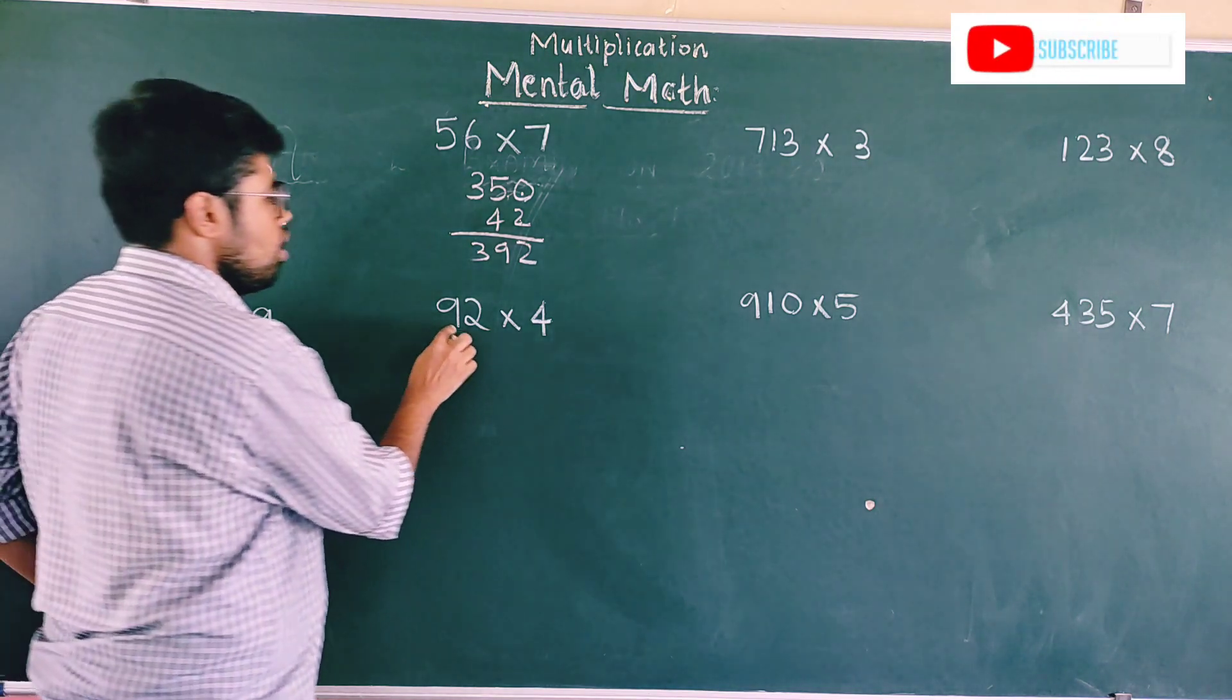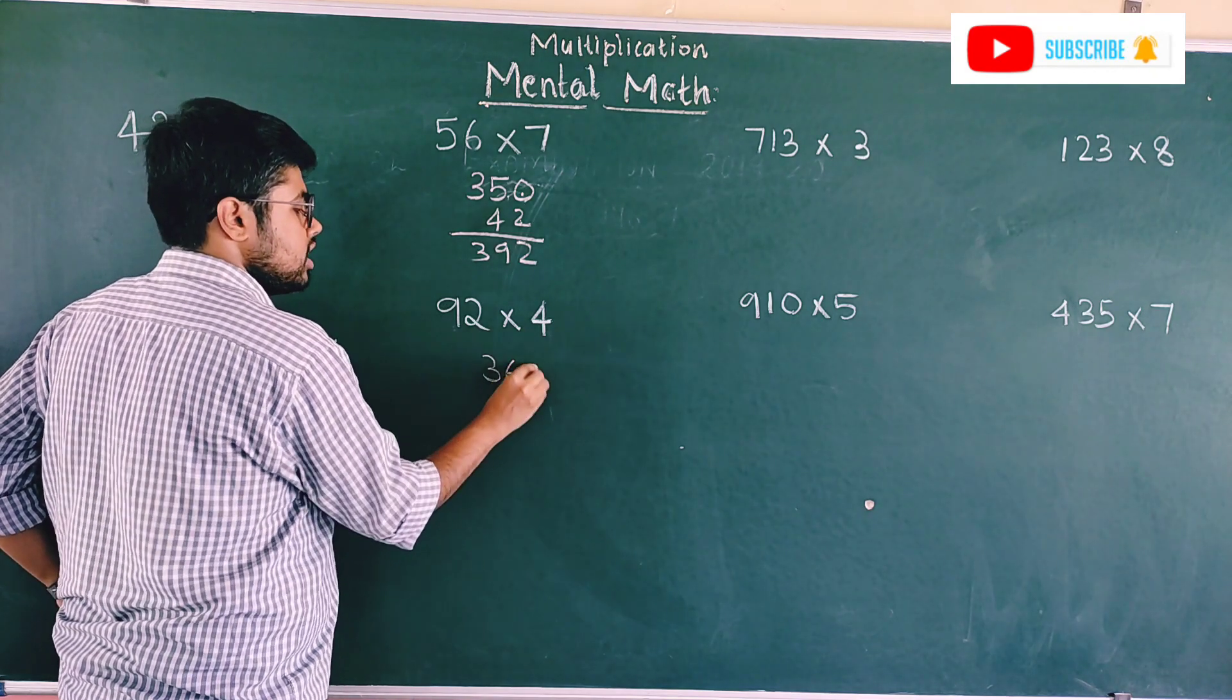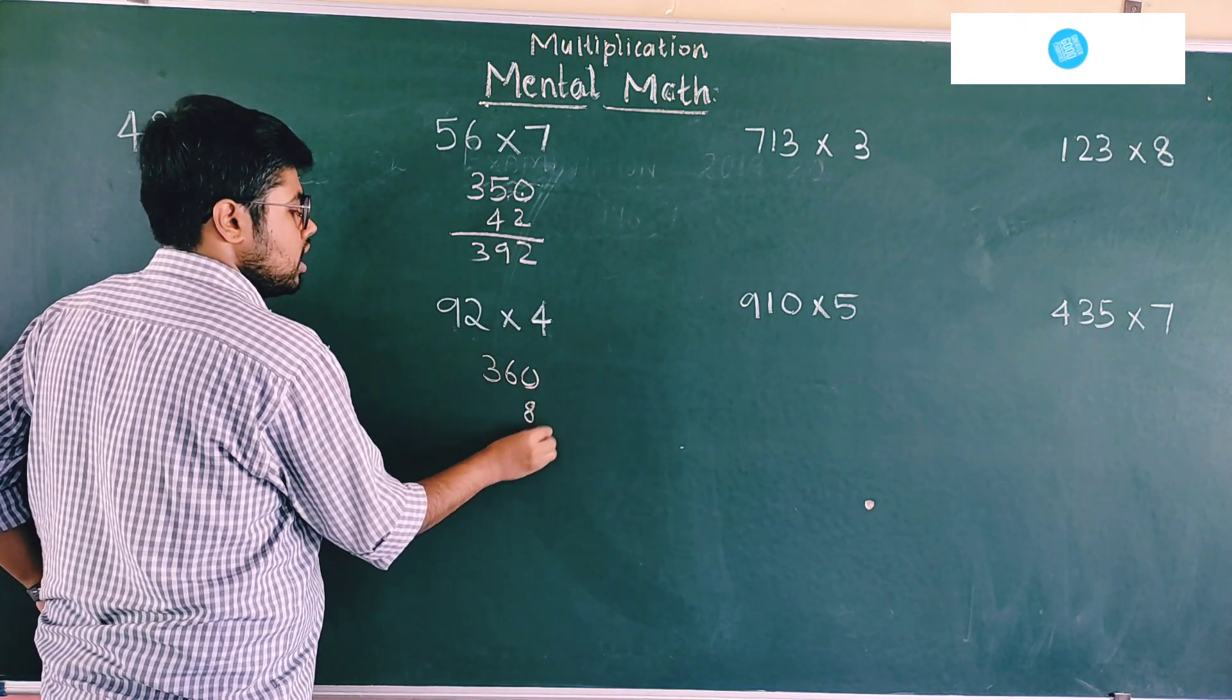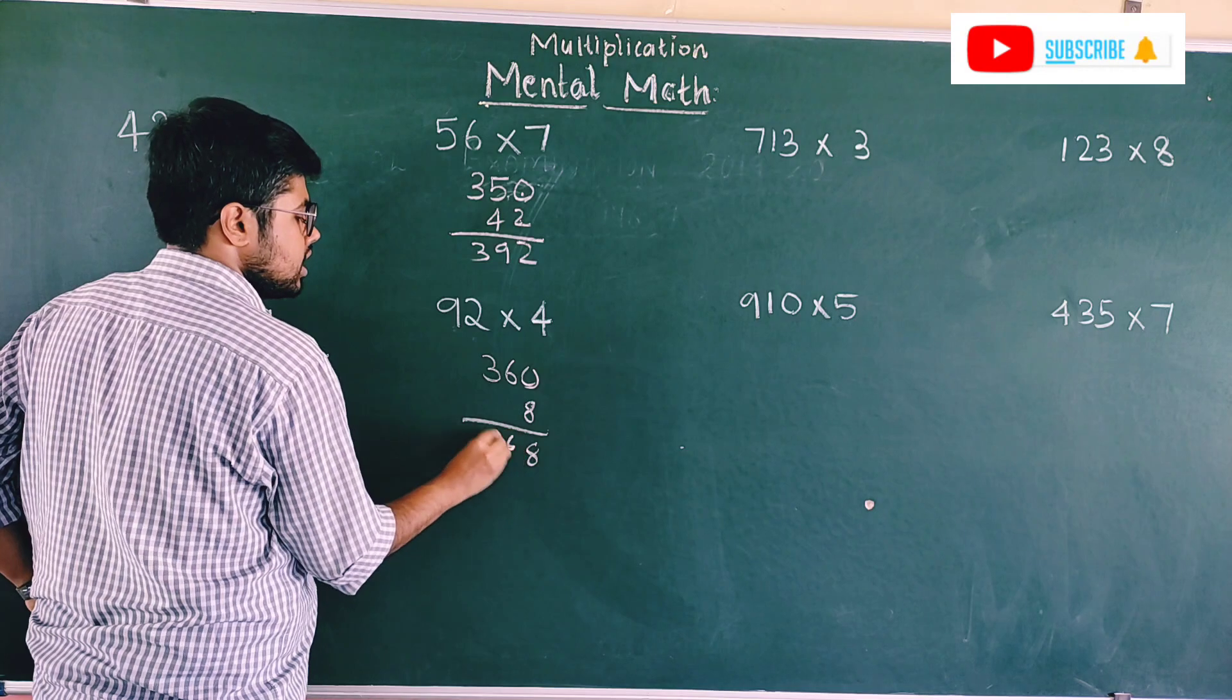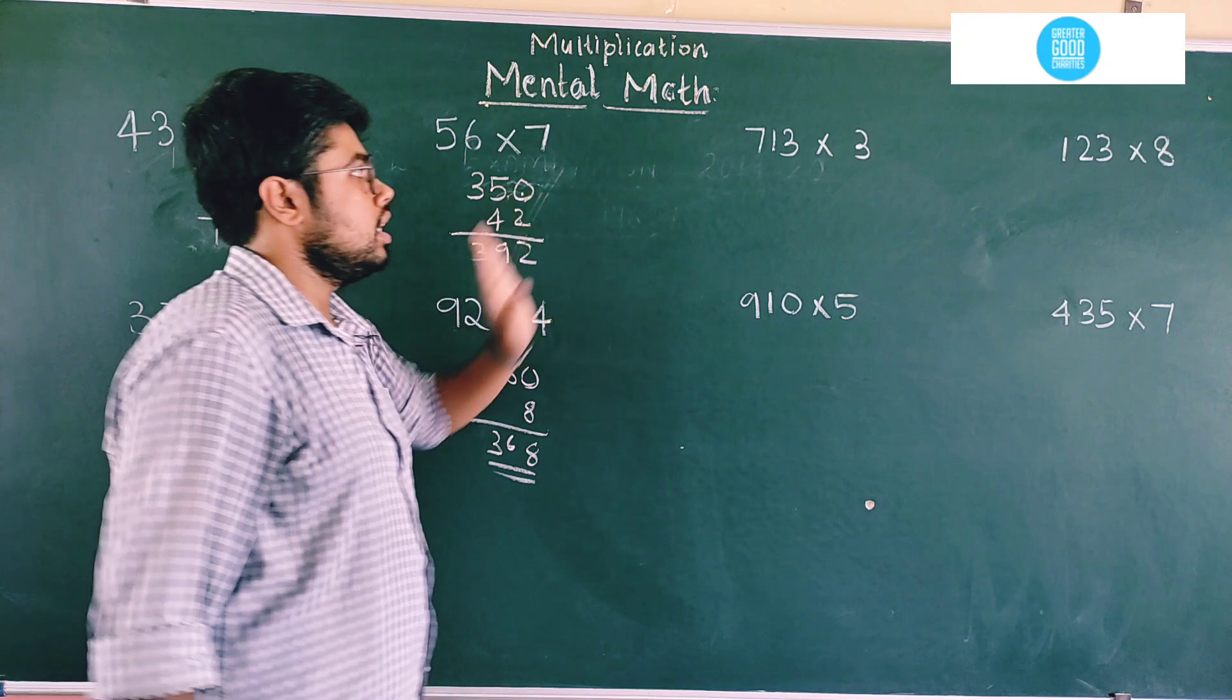Next, 92 into 4. First multiply 4 times 9 is 36. Put 1 zero. Next, 4 times 2 is 8. So 8 here, 6 plus 3. So 368 will be the right answer. I hope you understood. Similarly, now we'll do this 3-digit number.